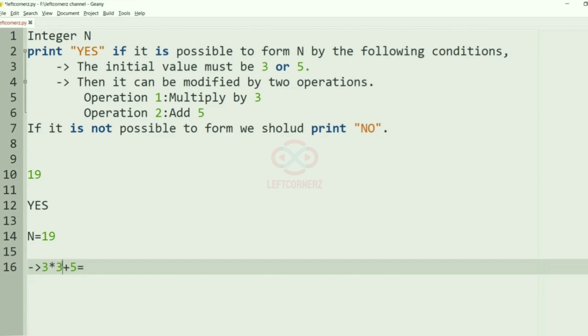So again we'll multiply by 3 and let's see what we get. So we get 27 plus 5 which is 32. So other than multiply by 3, we'll add again 5. So now 9 plus 5 plus 5, that is 19. So we have got 19, so we'll print YES as the output.